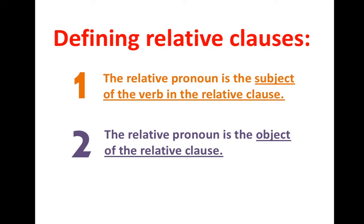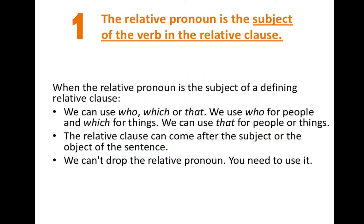In the first type of defining relative clauses, the relative pronoun is the subject of the verb in the relative clause. When the relative pronoun is the subject, we can use who, which, that, when, where, or whose. We use 'who' for people and 'which' for things; we can use 'that' for people or things. The relative clause can come after the subject or the object of the sentence, and we cannot remove the relative pronoun.